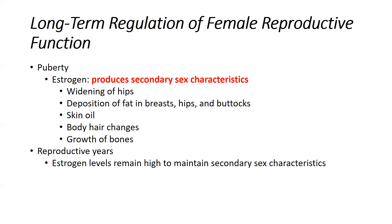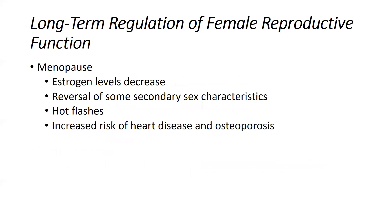During puberty, estrogen encourages secondary sex characteristics: widening of the hips, redistribution of fat around the breasts, hips, and buttocks, changes in oil glands, body and pubic hair development, and bone growth — similar to testosterone in males. During reproductive years, estrogen offers a protective function: women producing estrogen are protected against heart disease, osteoporosis, and some types of uterine cancers.